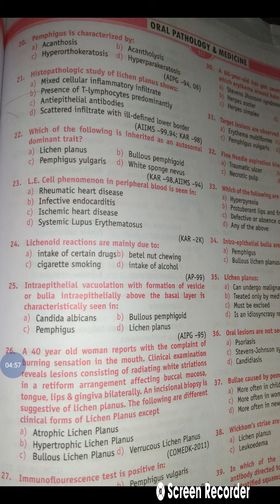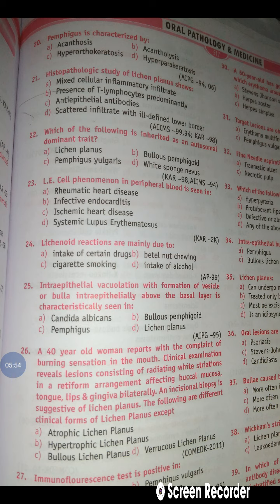Question 26: A 40-year-old woman reports with a complaint of burning sensation. Clinical examination reveals lesions consisting of radiating white striae in a retiform arrangement affecting lips, tongue, and buccal mucosa. Biopsy confirms the diagnosis of lichen planus. The question asks which form is NOT a type of lichen planus. The answer is D — the varius form — because it is not found in lichen planus. The types of lichen planus have been covered earlier.